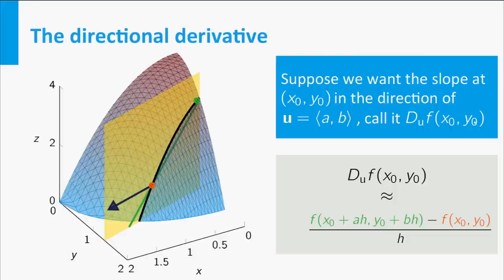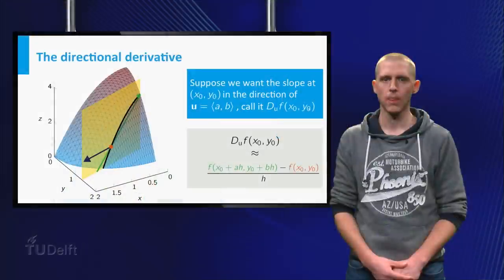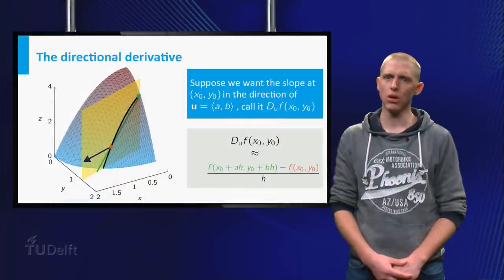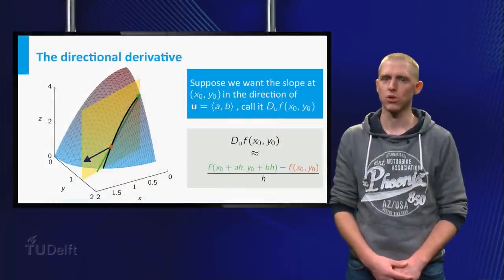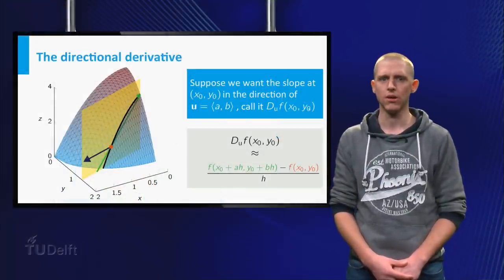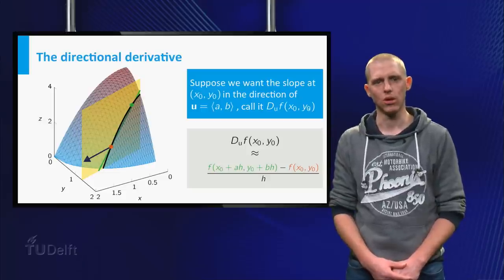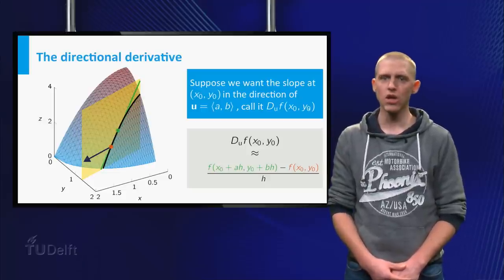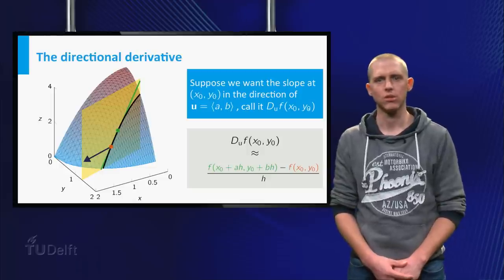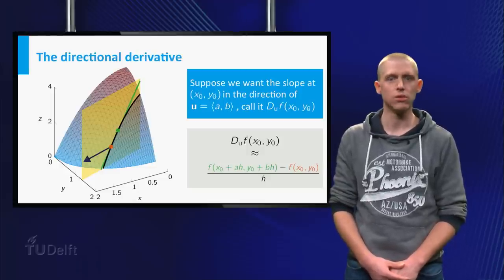If you then divide this change in the function by the distance you travelled, you can approximate the slope duf by f x0 plus a h, y0 plus b h minus f x0, y0 over h. If you take h a little bit smaller, then you can expect that the approximation becomes a little better. You can even take h again a little bit smaller, and smaller, and smaller. Of course h is 0 does not make sense, because you are not allowed to divide by 0.